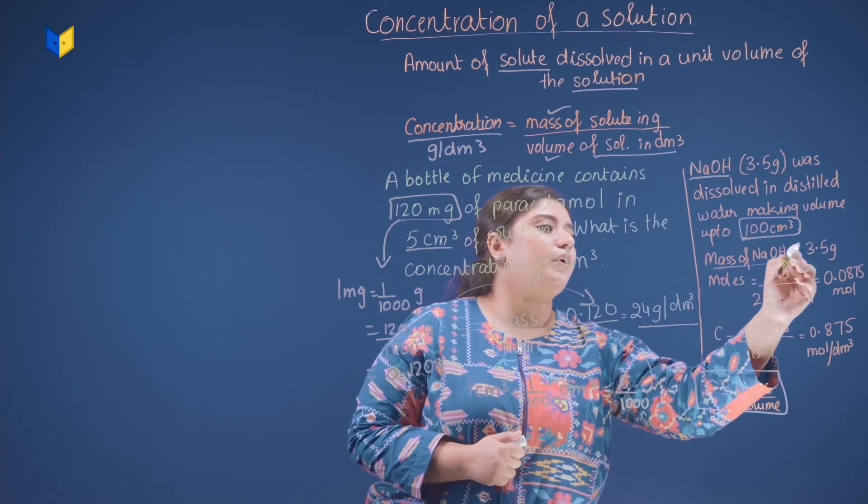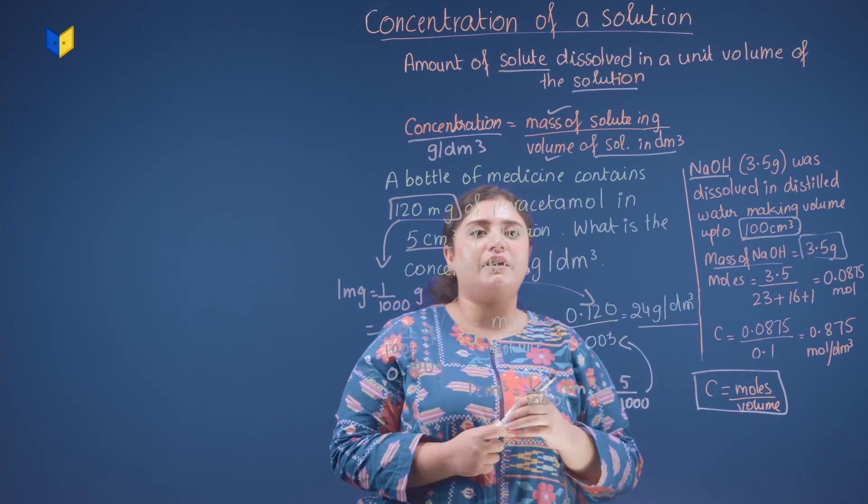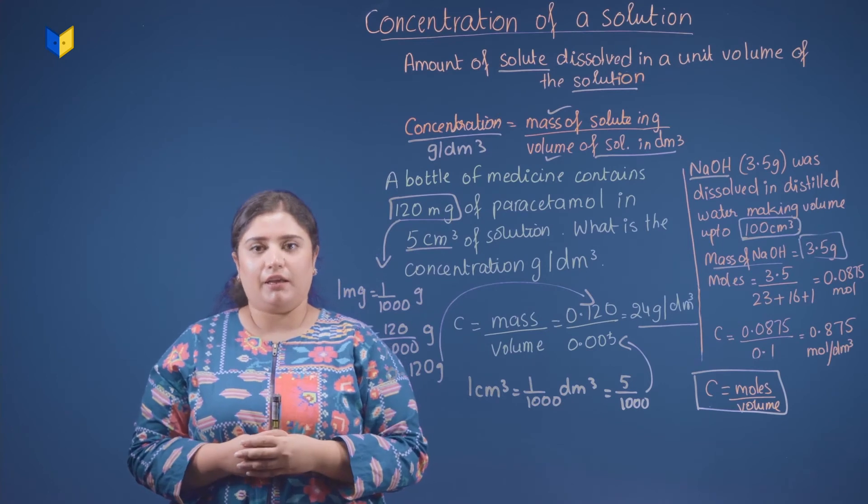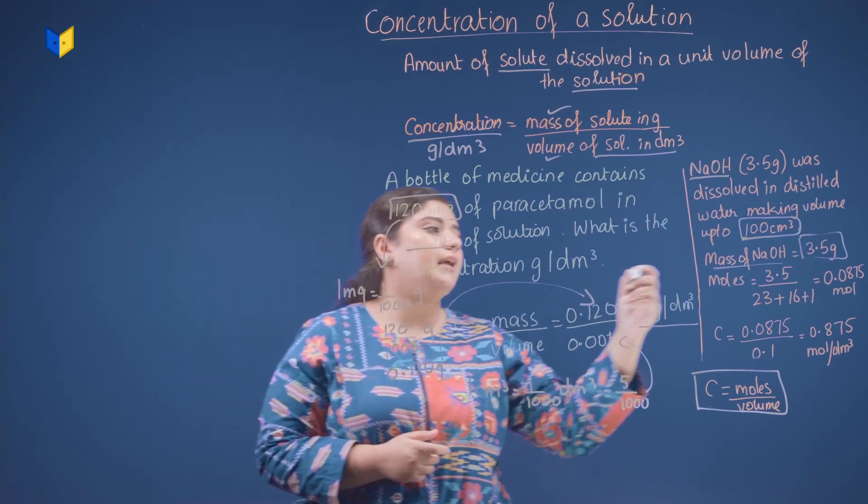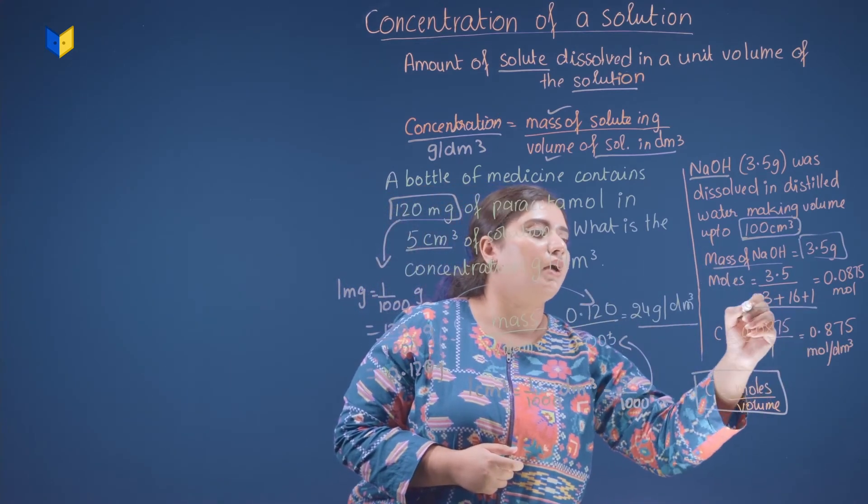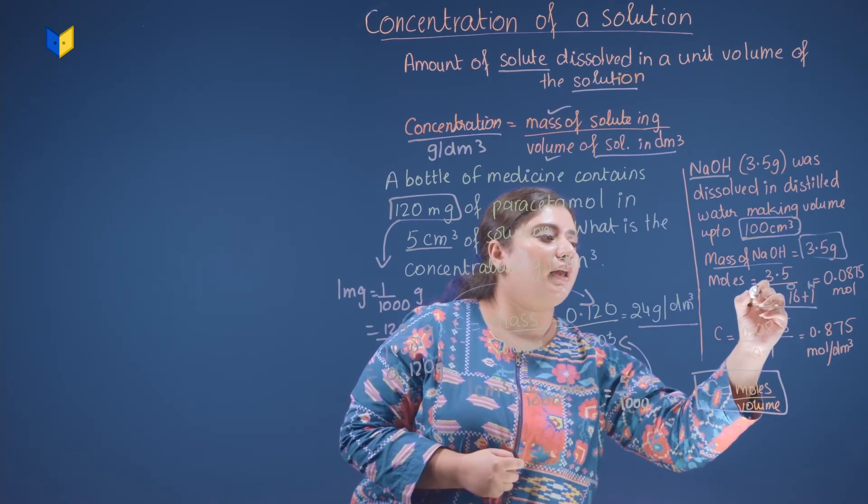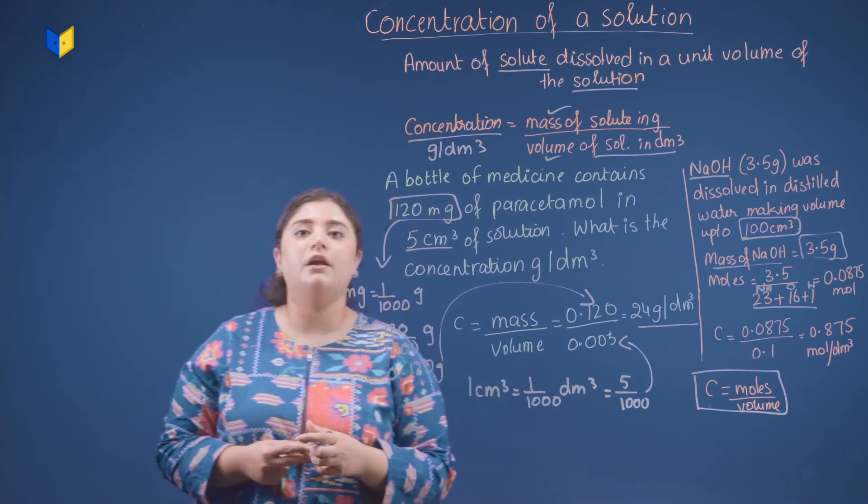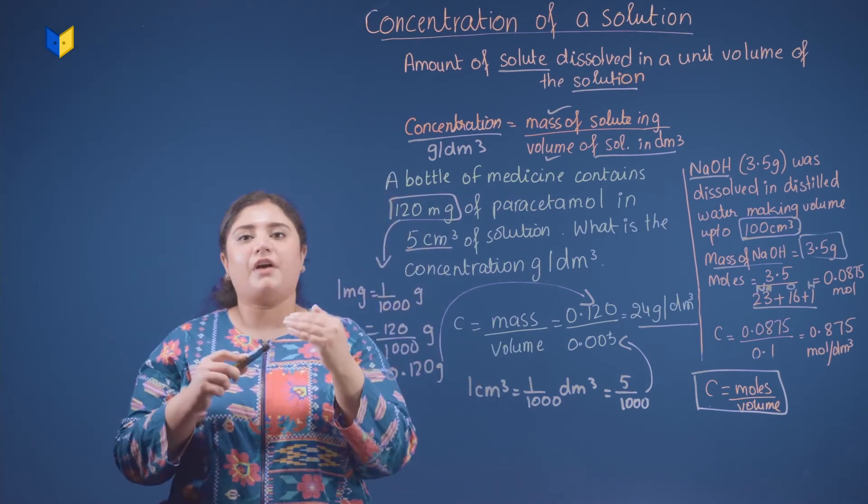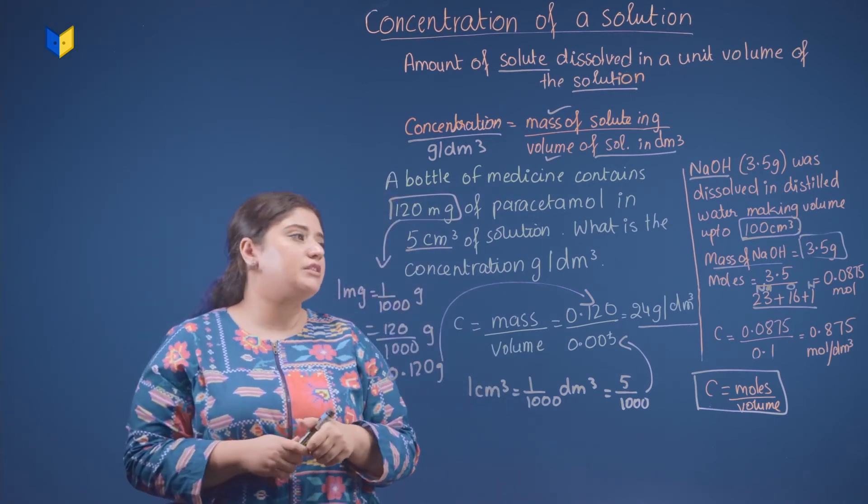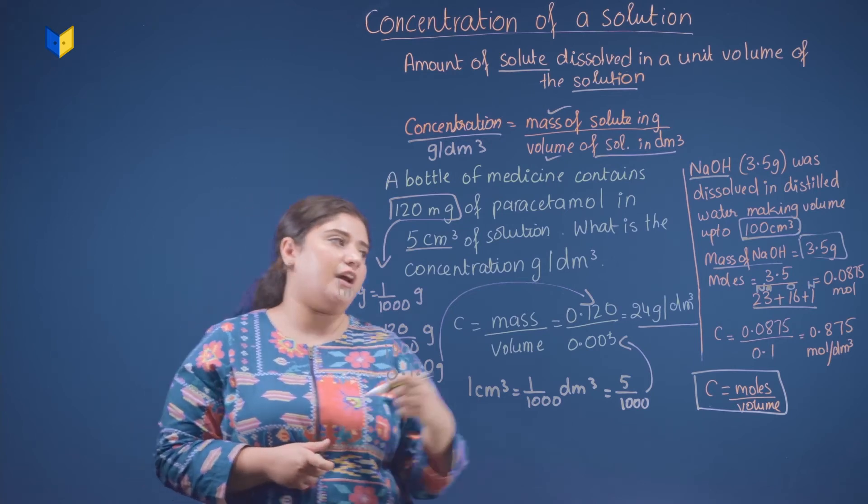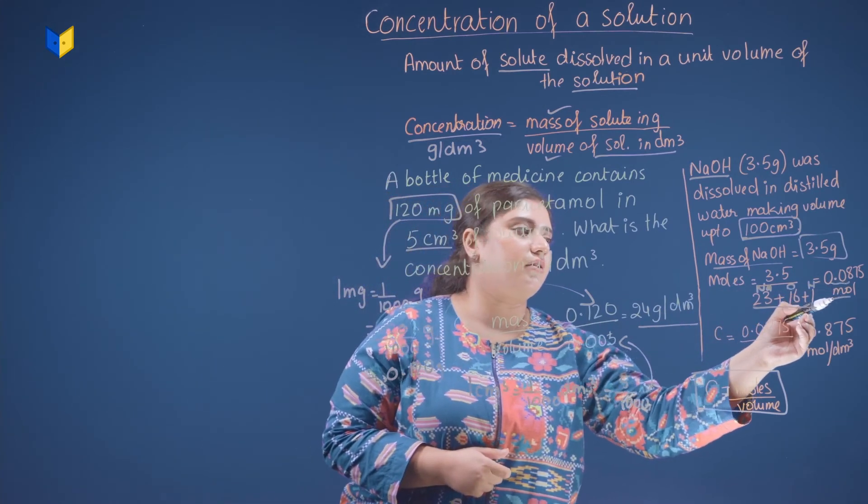Now what do you want to do? Mass of NaOH is 3.5 gram, which you already have given. You will find out moles of it. What do you want to find out? Mass over MR. 23 for sodium, O and H, NaOH. You have to do your molecular mass calculation, and when you divide it, you're going to get the moles, that is 0.0875 moles. It's right here.